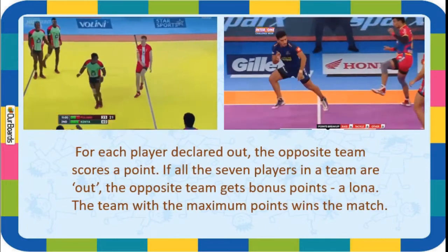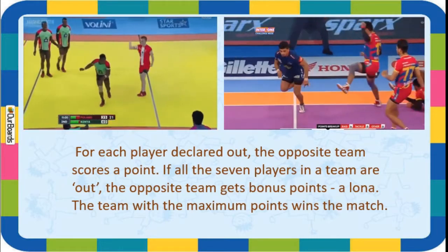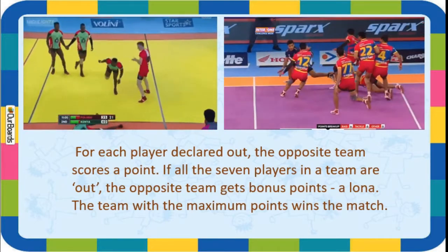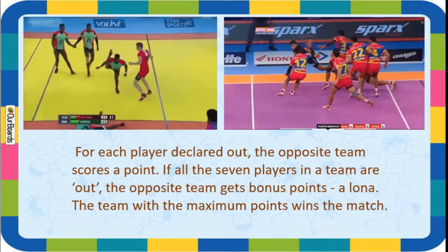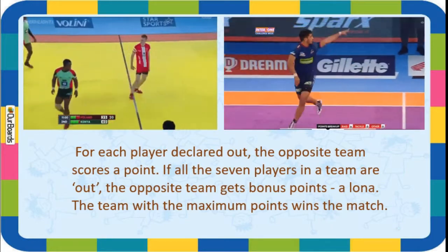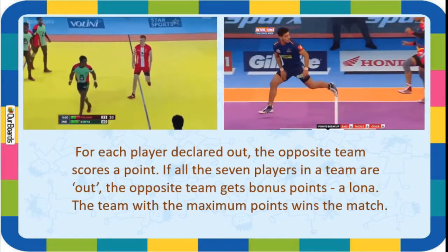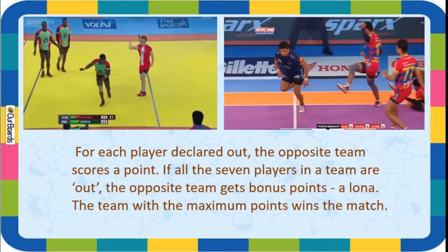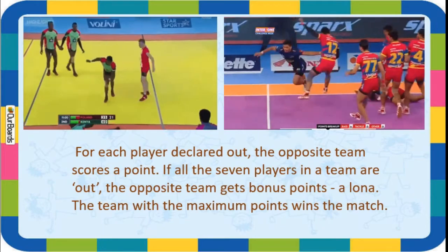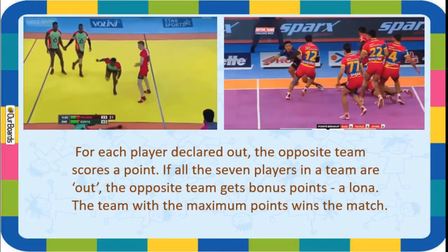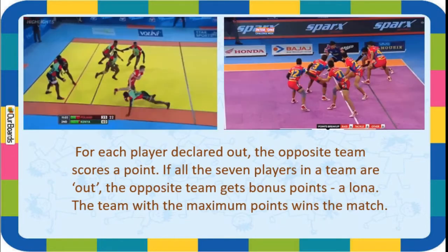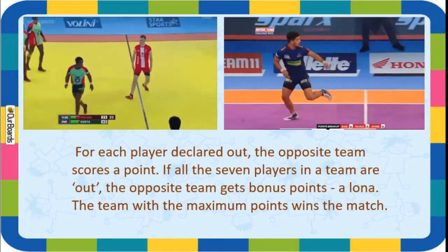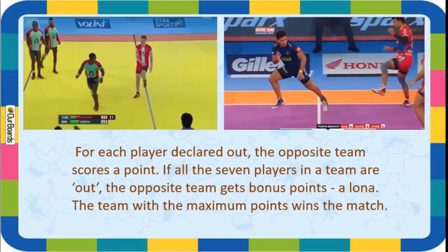For each player declared out, the opposite team scores a point. If all seven players in a team are out, the opposite team gets bonus points - called Lona. The team with the maximum points wins the match. These are the rules of Kapati.